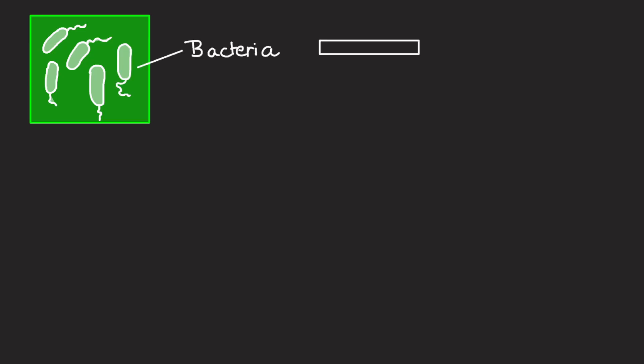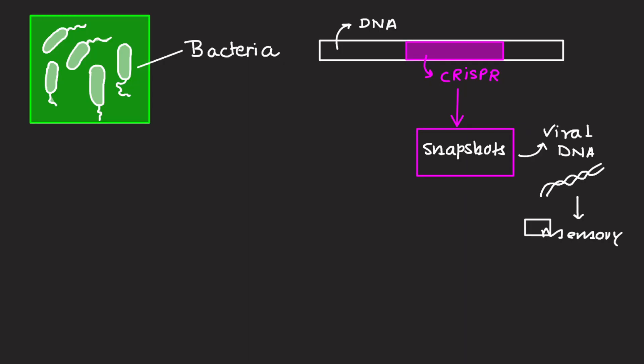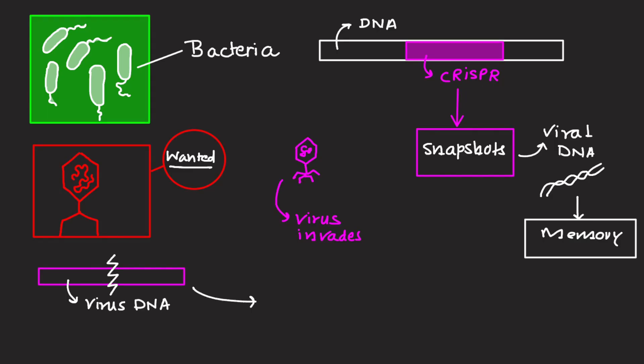In bacteria, CRISPR is a part of the DNA that stores snapshots of viruses that have attacked them in the past. These snapshots are actually short sequences of viral DNA saved as a memory. Think of it as a wanted poster board in a police station, where every time a virus invades, the bacteria cut out a piece of DNA and paste it into its own DNA for future reference.